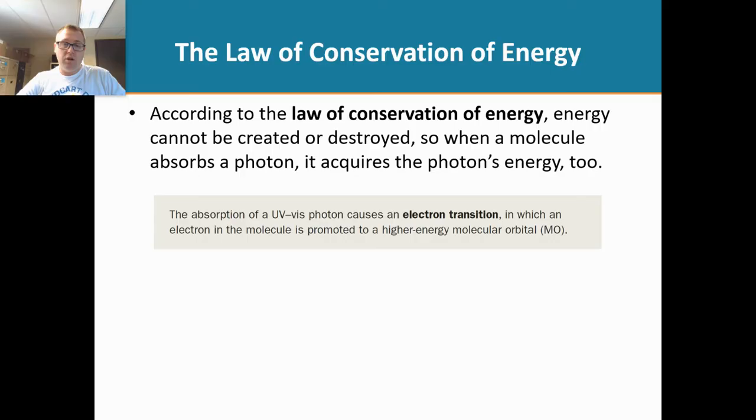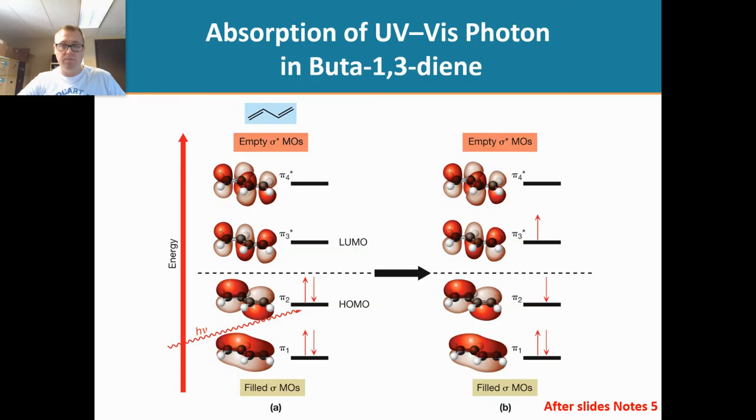When you have a molecule and you zap it with UV or visible light, it's going to cause an electron transition. We can see this in the MO. Here's our butadiene here, and this is the MO before we zap it with light. But what happens when we zap the butadiene with a photon of light, represented with that arrow there, we get a promotion. We promote that electron to a higher energy molecular orbital.